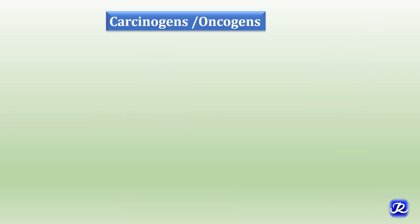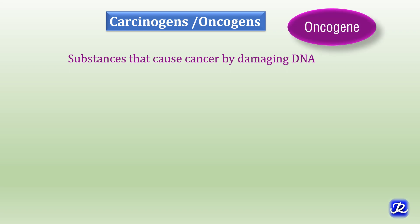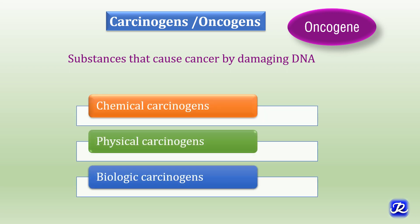What are carcinogens or oncogens? These are substances that cause cancer by damaging DNA. It should be noted that oncogens and oncogenes are different. Oncogens are carcinogens that cause cancer by damaging DNA, whereas oncogenes are genes which are involved in the development of cancer. There are three types of carcinogens: chemical carcinogens, physical carcinogens and biological carcinogens.